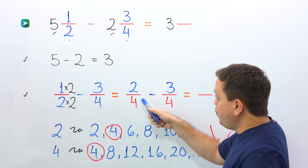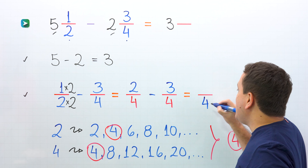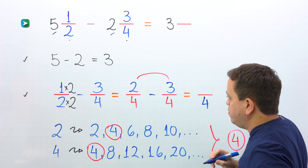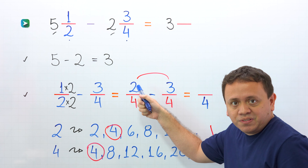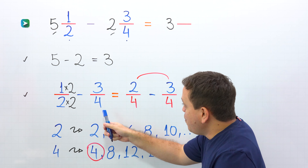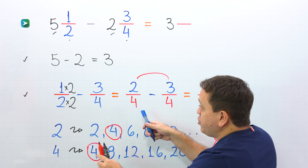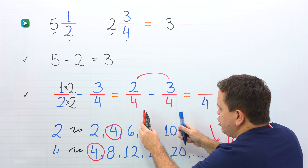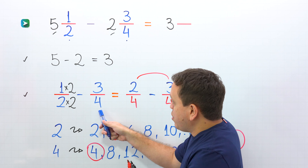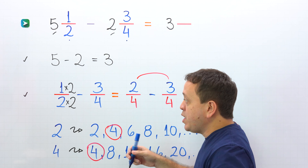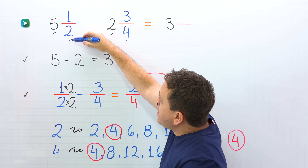Now we need to subtract 2 fourths minus 3 fourths. These two fractions have the same denominator. 4 on the left, 4 on the right. We continue by subtracting the numerators: 2 minus 3. Wait a minute — we cannot subtract 3 from 2, because 3 is bigger than 2. 1 half and 2 fourths are equivalent fractions — they represent the same value. Which fraction is bigger, 2 fourths or 3 fourths? 3 fourths is bigger. That means that the second fraction, 3 fourths, is greater than the first fraction we have. This is a special case, because the fractional part of the second mixed number is greater than the fractional part of the first mixed number.